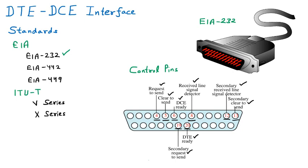These are not data-sending pins — they are control pins. Control pins manage the data flow: you request from the other person using Request to Send, the other party responds with Clear to Send, DCE Ready indicates DCE is ready to send, DTE Ready indicates DTE is ready to receive, and the signal detector detects data movement.